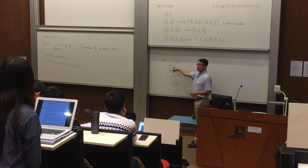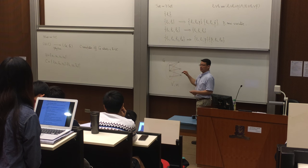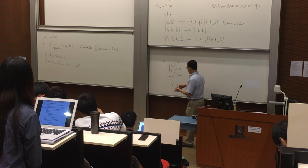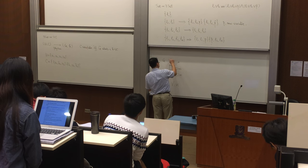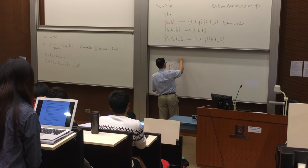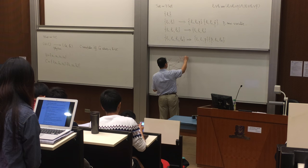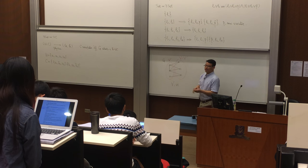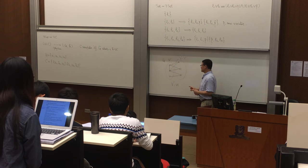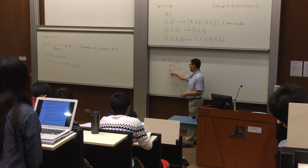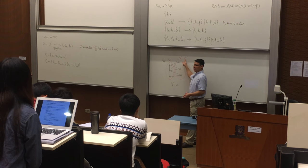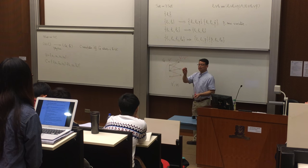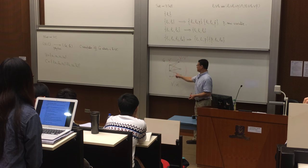The vertex cover must cover all edges. We have this set V'. The rest part is V minus V'. The vertex cover defines a partition into two parts: V' and V minus V'. Each vertex is either inside V' or inside V minus V'.